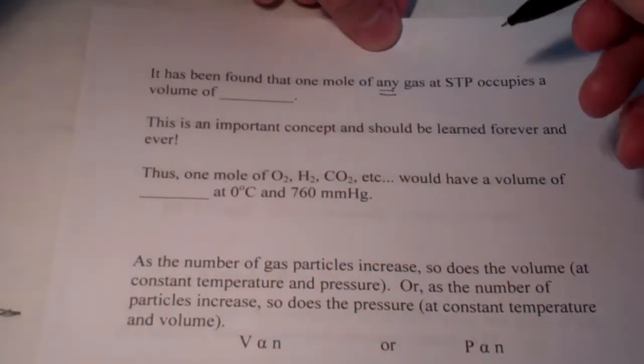Now, it should make sense that as the number of gas particles increase, so would the volume of my balloon. Or, if my container wasn't flexible like a balloon, if I had a rigid container, as the number of particles increased, so would the pressure. So, we could state Avogadro's law as follows. The volume is proportional to the number of moles, so long as the temperature and pressure remain constant. Or, we could say the pressure is proportional to the number of moles, so long as the volume and temperature stay constant.